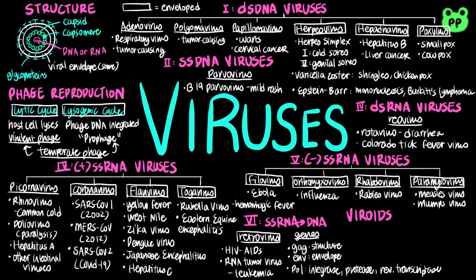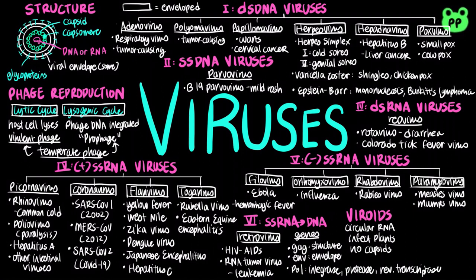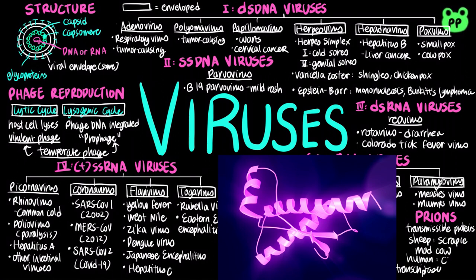Viroids are circular RNA molecules that infect plants and disrupt their growth. Unlike viruses, viroids don't have capsids. Prions are slow-acting, virtually indestructible infectious proteins that cause brain diseases in mammals. Prions propagate by converting normal proteins into prion versions, such as scrapie in sheep, Kuru disease, and Creutzfeldt-Jakob disease in humans.